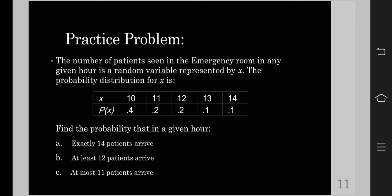What will be its corresponding probability? We're just going to add 0.4, which is the probability that corresponds to 10, and 0.2, which is the probability that corresponds to 11. So we have 0.4 plus 0.2, and that will be 0.6. This tells us that the probability that at most 11 patients arrive is 0.6, and that is all for this video.